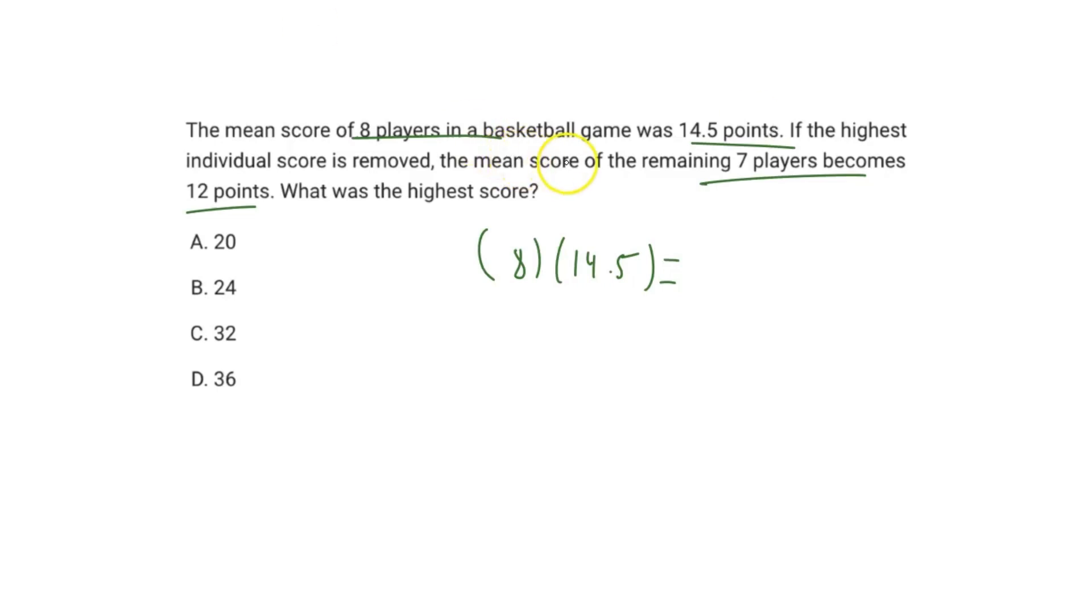So 8 times 14.5 gives us a value of 116. So we know there's 116 total points scored in the entire game by the eight players. But now they tell us the mean score of the remaining seven players becomes 12 points. So we're going to do the same thing here, right?